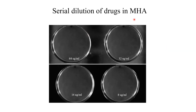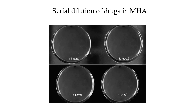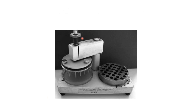The procedure is the same as discussed earlier. First, we make different concentrations of antibiotics in Mueller Hinton agar. Here you can see 64 micrograms per milliliter, 32, 16, and 8 milligrams per milliliter antibiotic concentrations in separate Mueller Hinton agar plates.